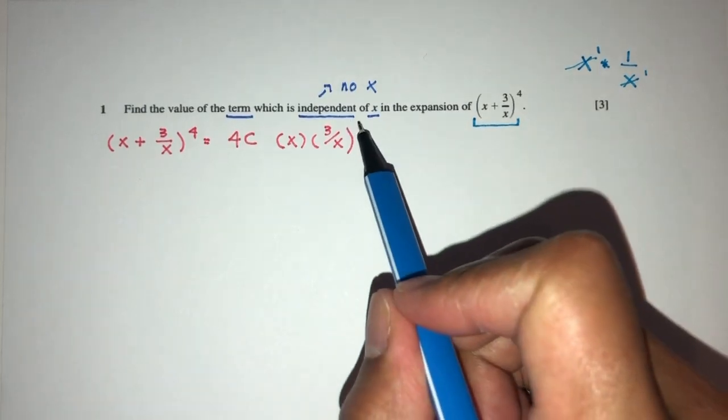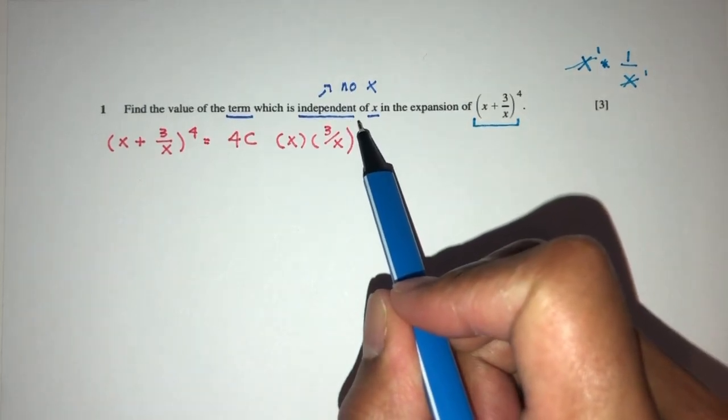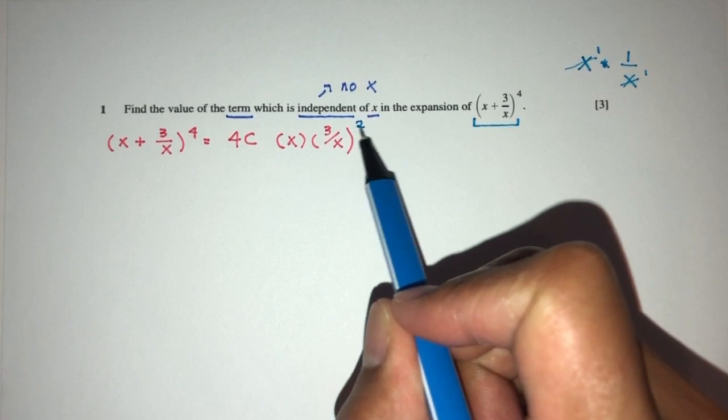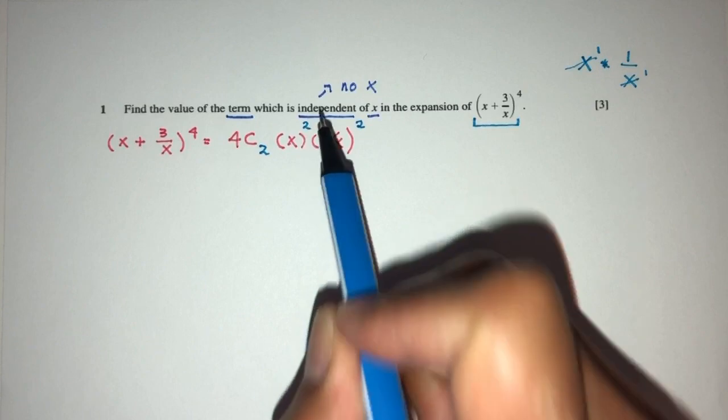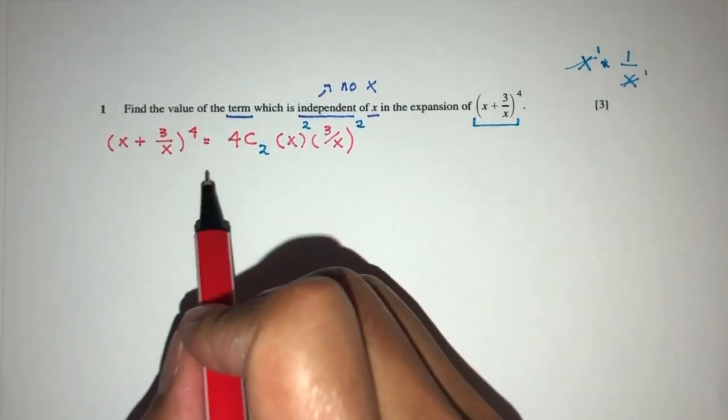So what power can I choose for this one? I will have to choose 2. If I choose 2 here, this also will be 2 here. Now 4 minus 2 is 2. 2 will be here. So now if you expand, you will see what happens.